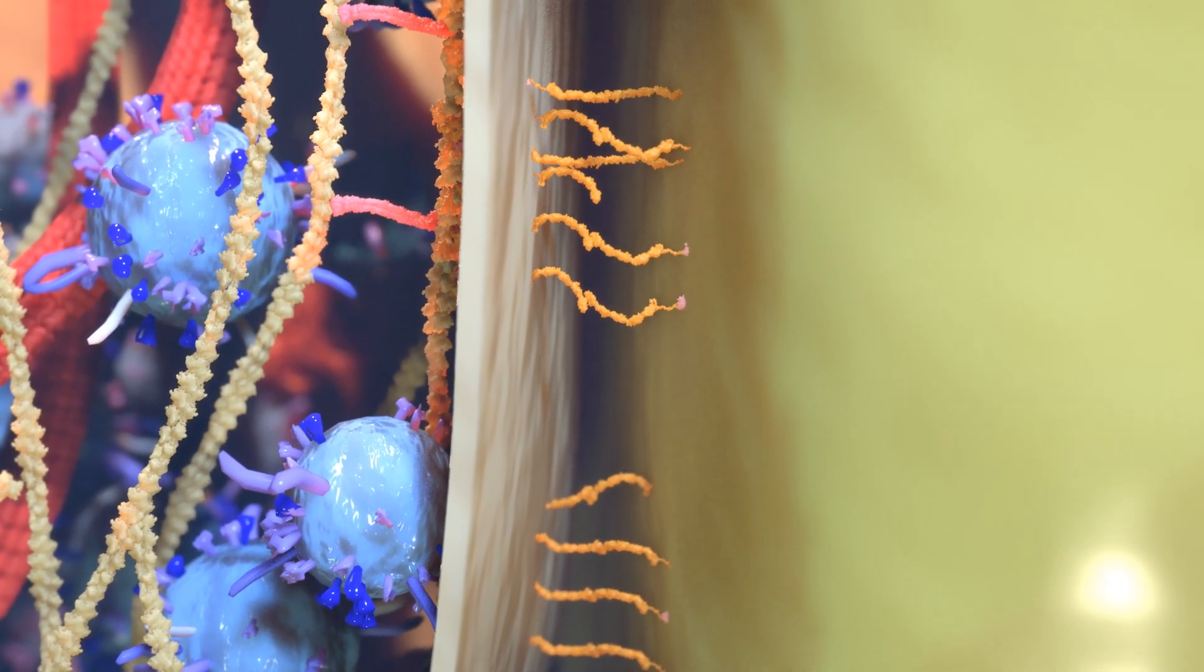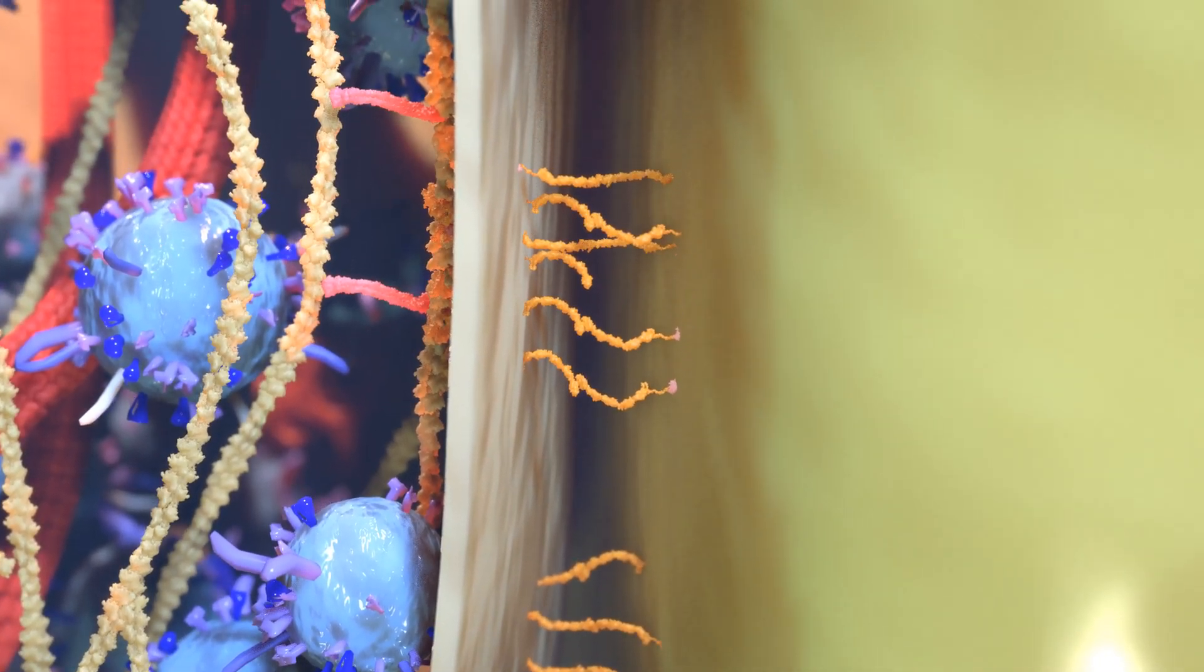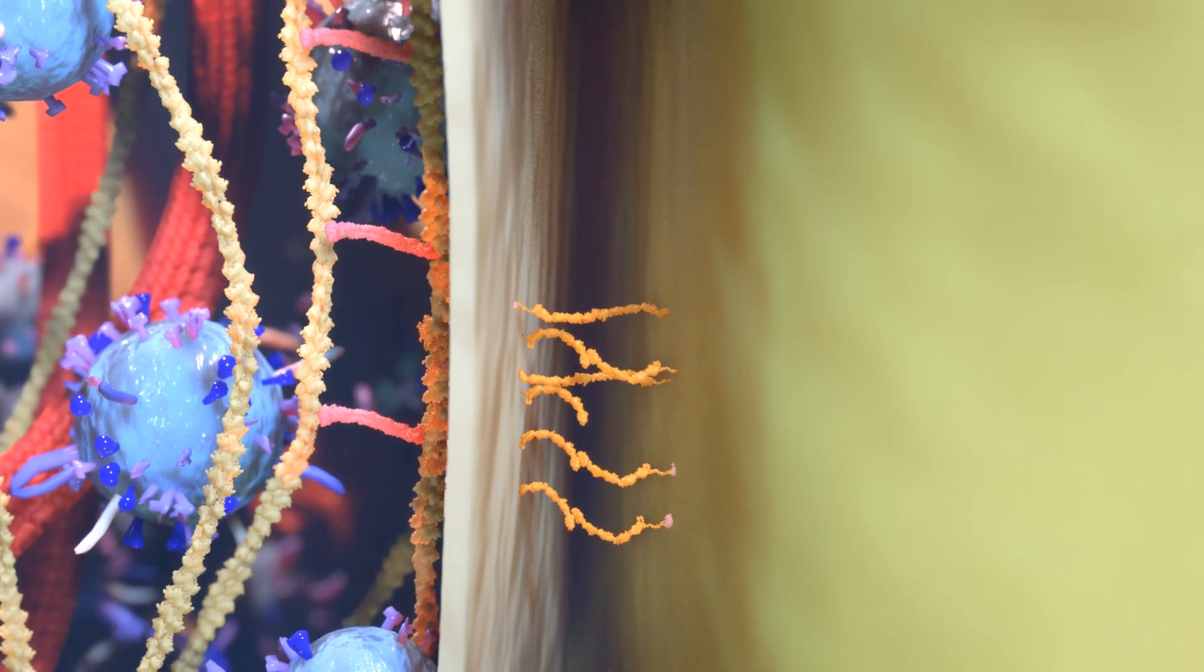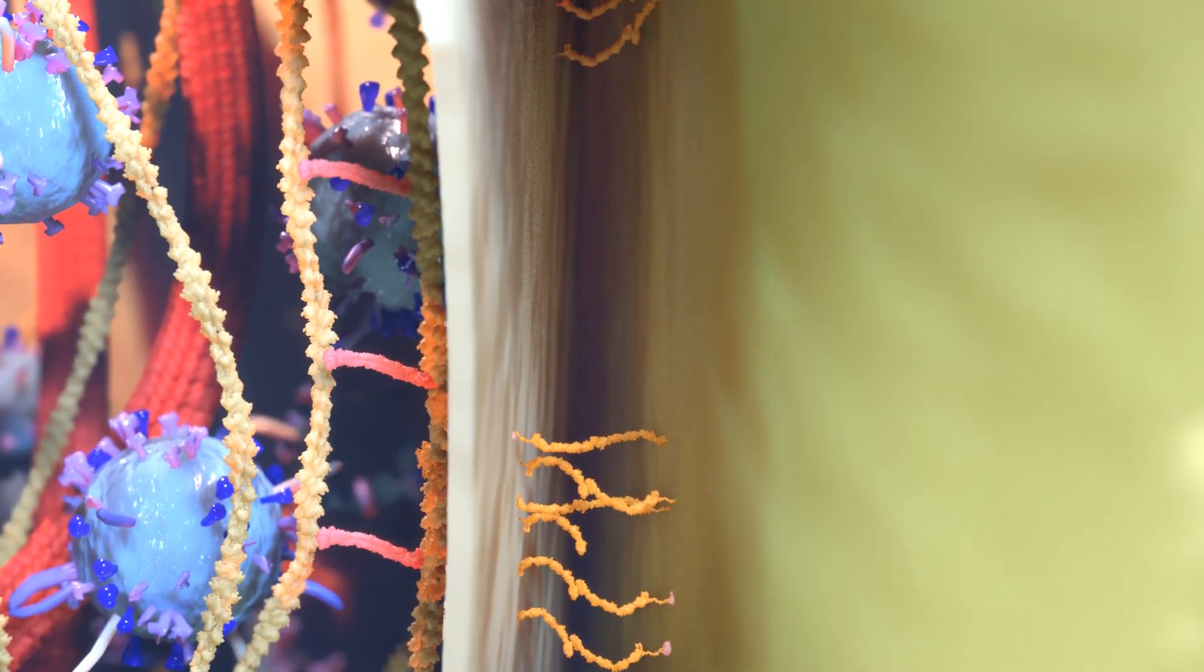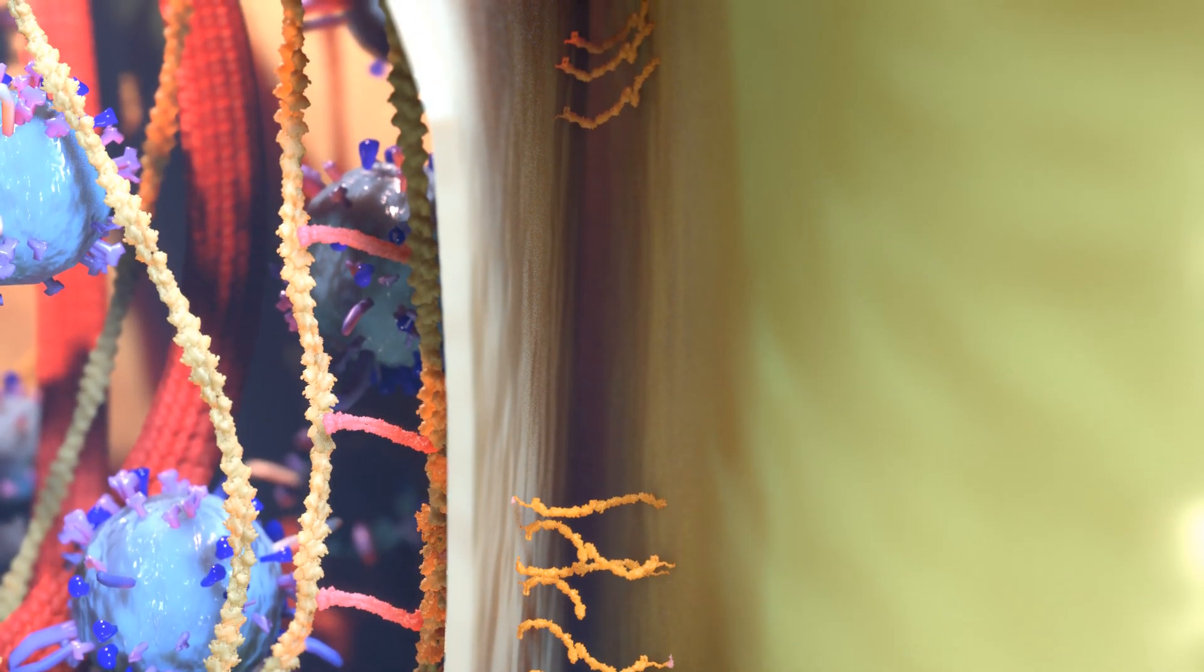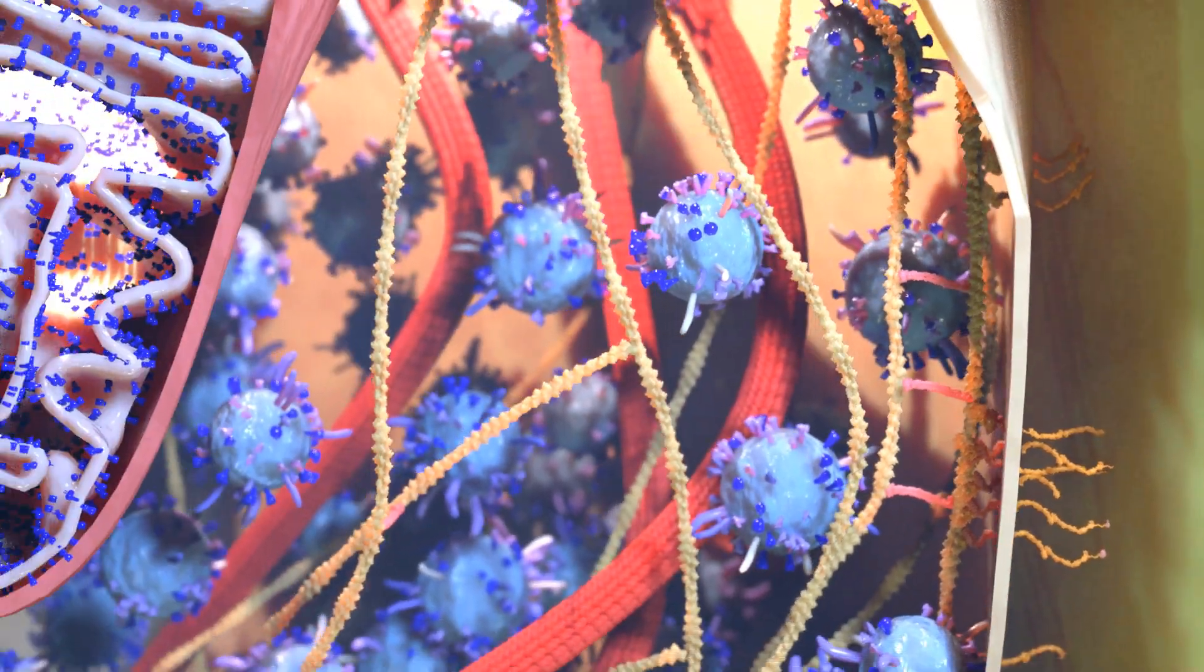These cadherin proteins are connecting the presynaptic terminal to other cells. They help maintain the synapse's structure and facilitate communication with the surrounding environment.